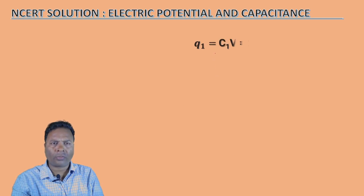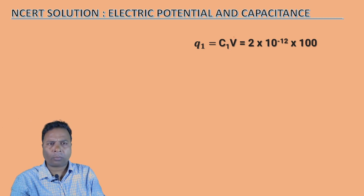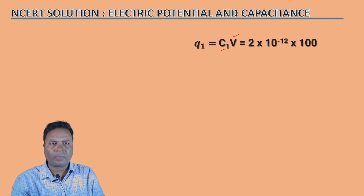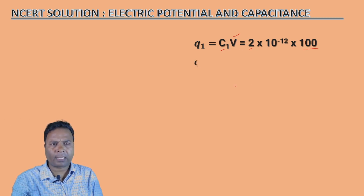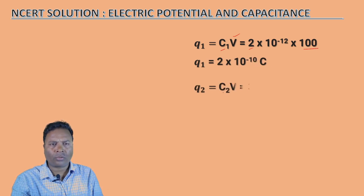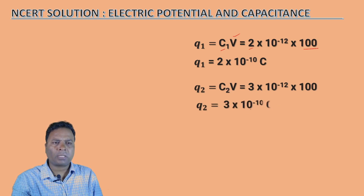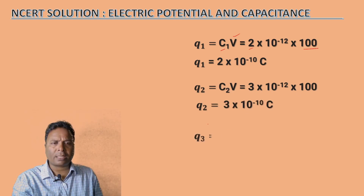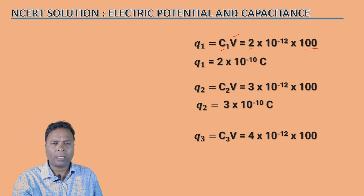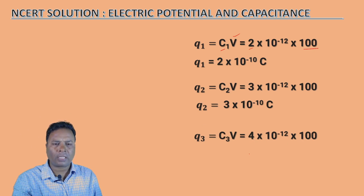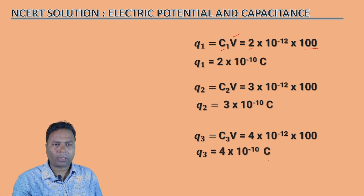Now we find the charge on each capacitor. Q1 = C1V: the voltage is the same for all, so Q1 = 2 × 10⁻¹² × 100 = 2 × 10⁻¹⁰ coulombs. Q2 = C2V = 3 × 10⁻¹² × 100 = 3 × 10⁻¹⁰ coulombs. Similarly, Q3 = C3V = 4 × 10⁻¹² × 100 = 4 × 10⁻¹⁰ coulombs.